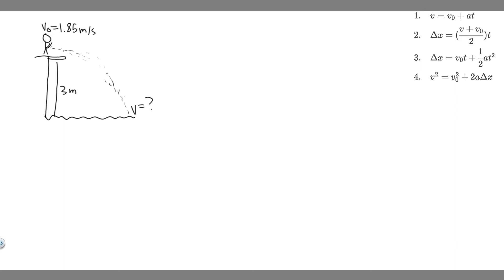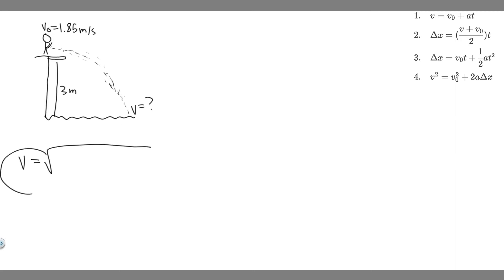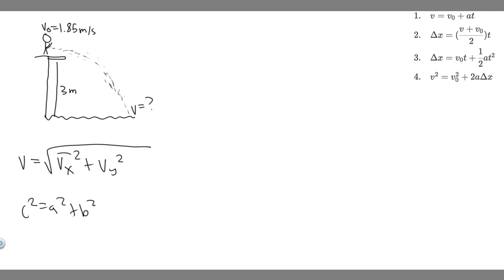Their final velocity — what we're trying to find — will have two parts: a velocity in the x and a velocity in the y. When you want to find the total velocity, you need to do: v = √(vx² + vy²). Think of it like the Pythagorean theorem: c² = a² + b². The resultant velocity combines both the x and y components when she enters the water. So we need to find her final velocity in x, her final velocity in y, square both, add them, and take the square root.